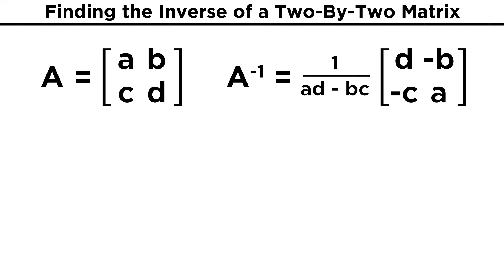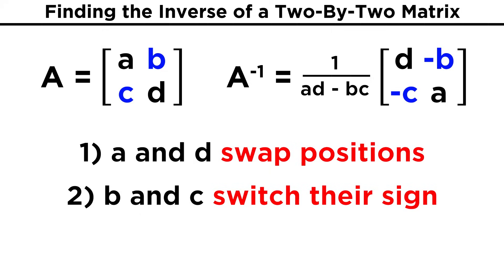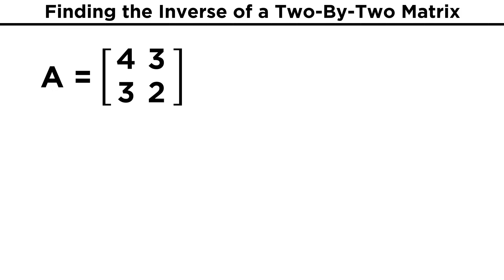So that's how you get the inverse of a two by two matrix: you swap A and D, change the sign on B and C, and divide by the determinant of the original matrix. Let's try a concrete example. How about a matrix with entries four, three, three, two?